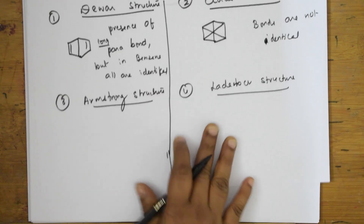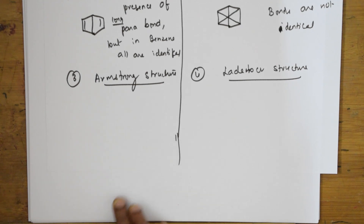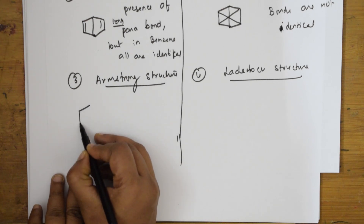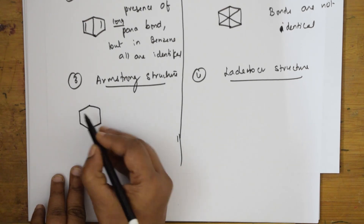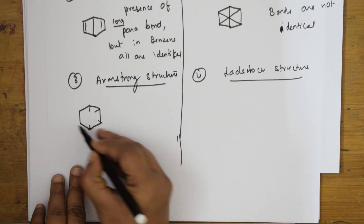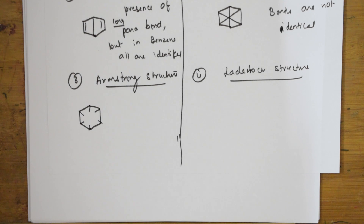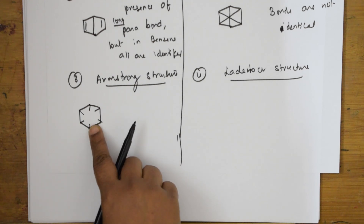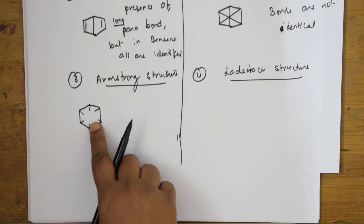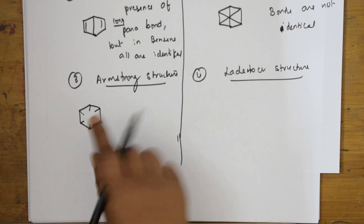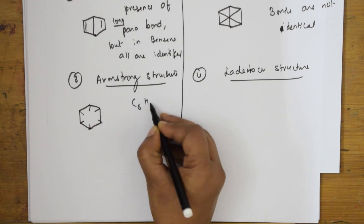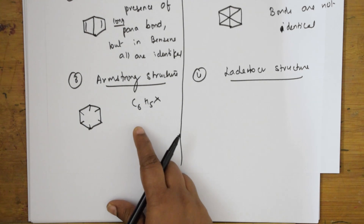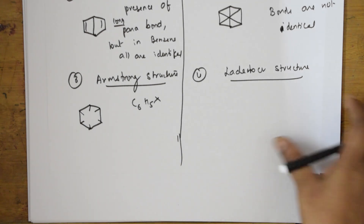Then came Armstrong structure. Armstrong structure is also cyclic only. What did Armstrong say? Each carbon in this structure has a valency which is not satisfied. In such a case, it has to form compounds like C6H5X. But such a product was not formed by benzene, and that's why this structure was also not accepted.